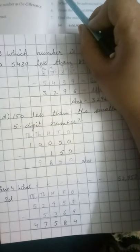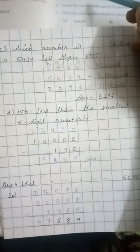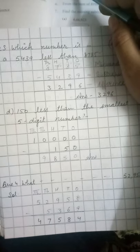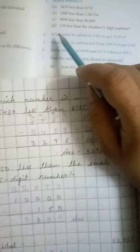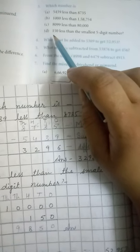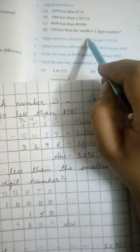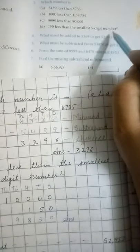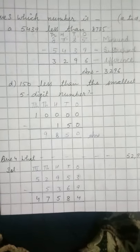Okay, now let's do part D of question number 3. 150 less than the smallest 5-digit number. So which is the smallest 5-digit number?